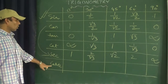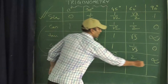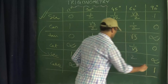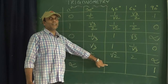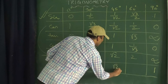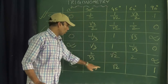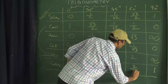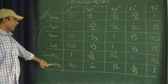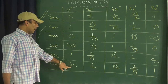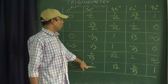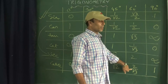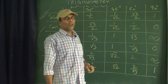For cosec, apply the cross technique again on the sec row — the last value comes first and the first goes last; the middle 45° value (√2) remains the same. Crossing 30° and 60°: cosec0° = undefined, cosec30° = 2, cosec45° = √2, cosec60° = 2/√3, cosec90° = 1.